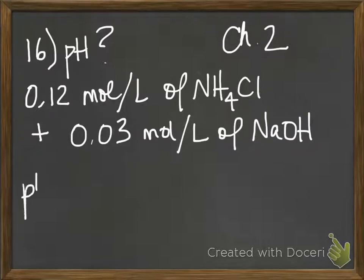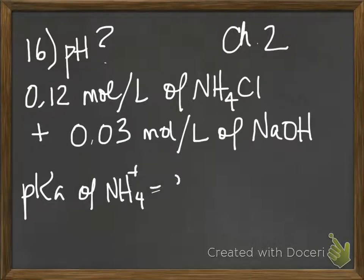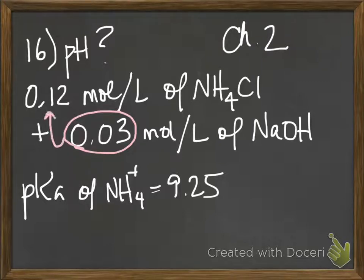We're told that the pKa of NH4+ is 9.25. Conceptually, what's happening is that this amount of base is going to react with that amount of NH4+, and it's going to give us new amounts of NH4+ and NH3.